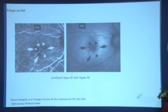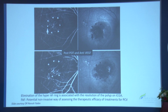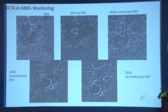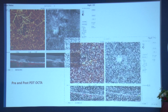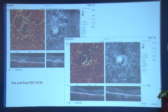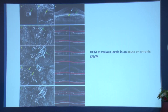Pre and post-PDT changes show the hyperfluorescence converting to hypo, and OCTA in exudative AMD monitoring reveals how neovascularity changes before and after PDT. Color images on OCTA are also helpful when regular OCTA is unclear. OCTA further helps differentiate CNV lesion presence at different levels — superficial or deeper — by adjusting the cursor to see where the CNV is most prominent.